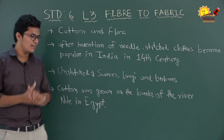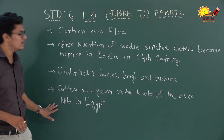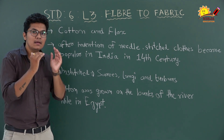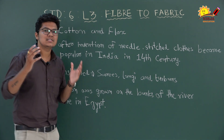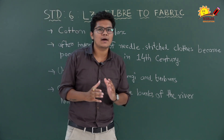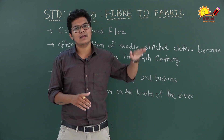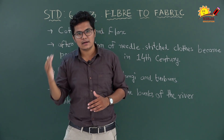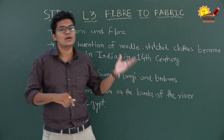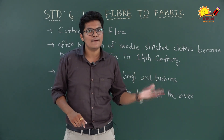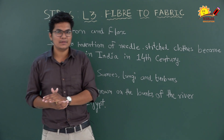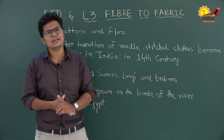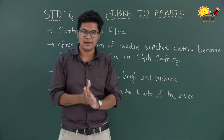Eventually, crops were cultivated to make fabrics. Cotton was grown on the banks of the river Nile in Egypt. So in prehistoric times, when people knew nothing about clothes, they gradually progressed — from settling down and starting agriculture, to weaving twigs and grass into baskets and mats, to learning about cotton and flax, and eventually cultivating cotton along the banks of the Nile.